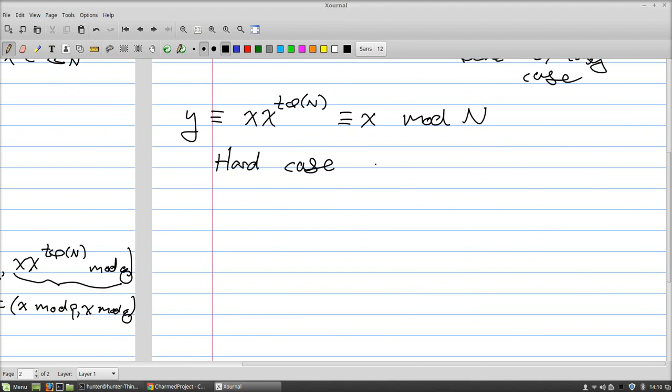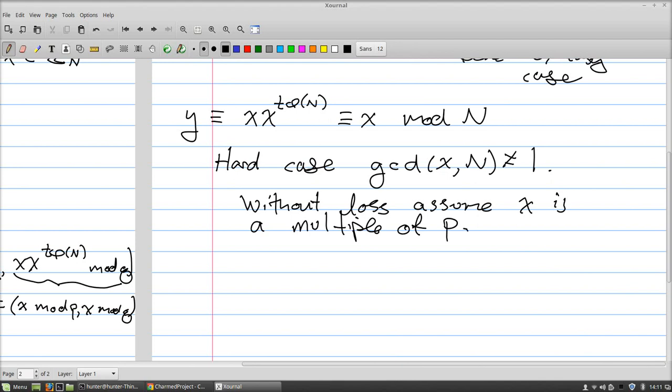Now let's do the hard case. In the hard case, the gcd of x and N is not equal to 1. Without loss of generality, we can assume that x is a multiple of p. The only way this could happen—the gcd of x and N is either 1, p, q, or N, and it's obviously not N because x is smaller than N. So it's either 1, p, or q. The cases with whether it's p or q are symmetric, so let's just assume that the gcd is p, and so that means that x is a multiple of p.